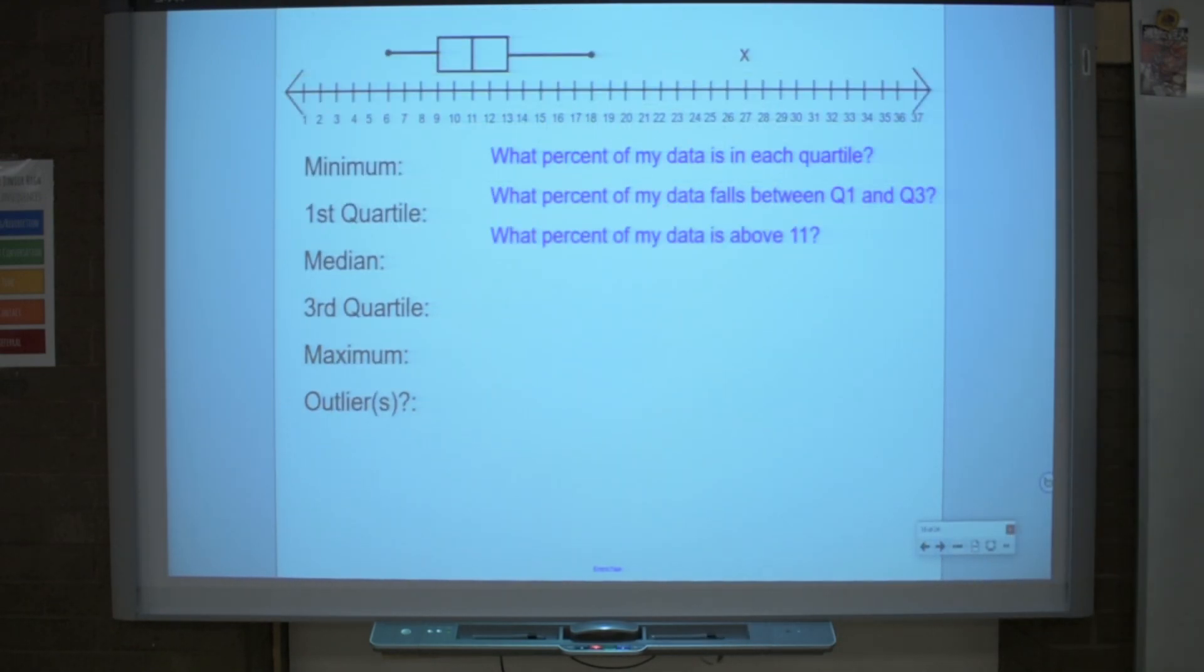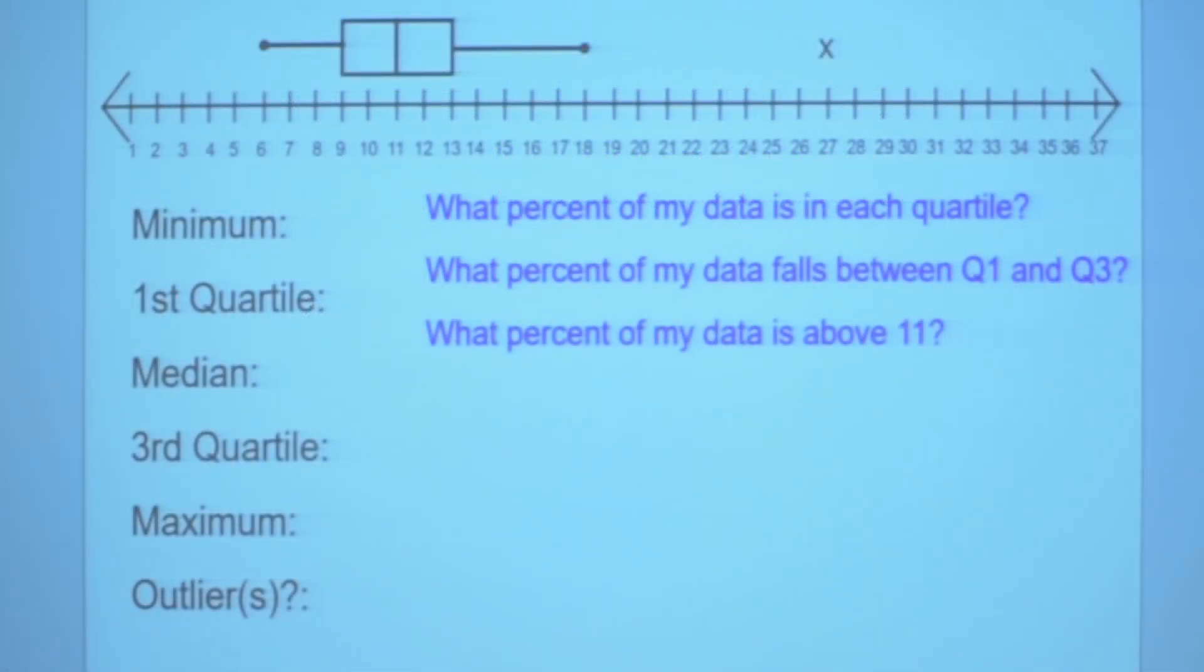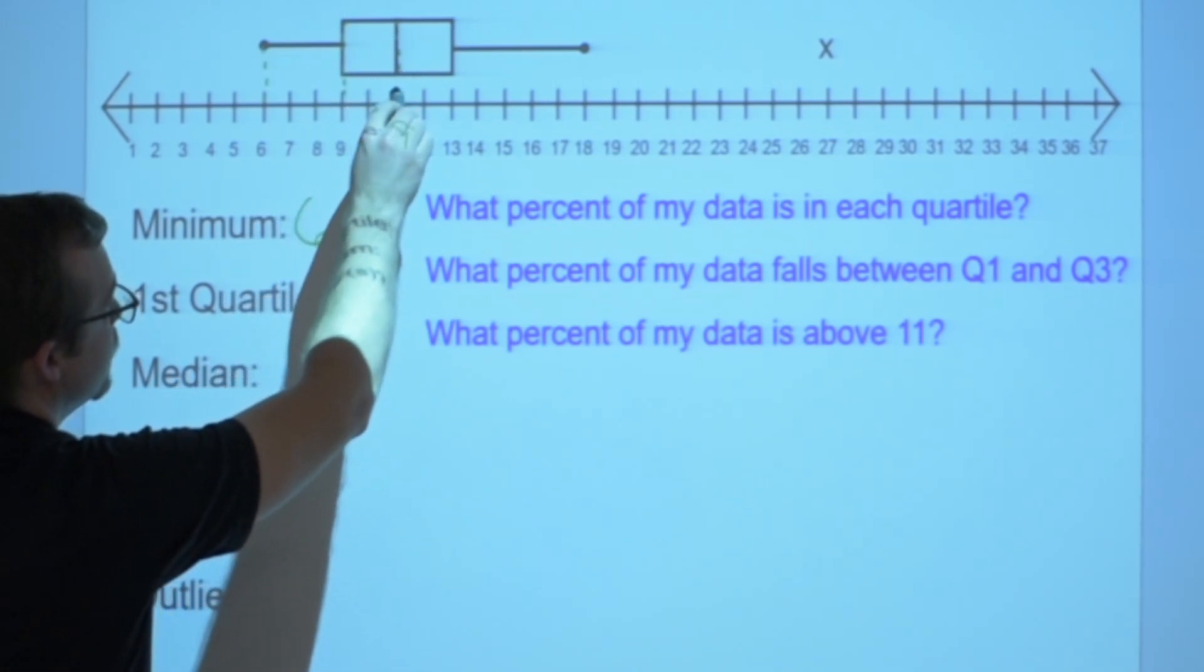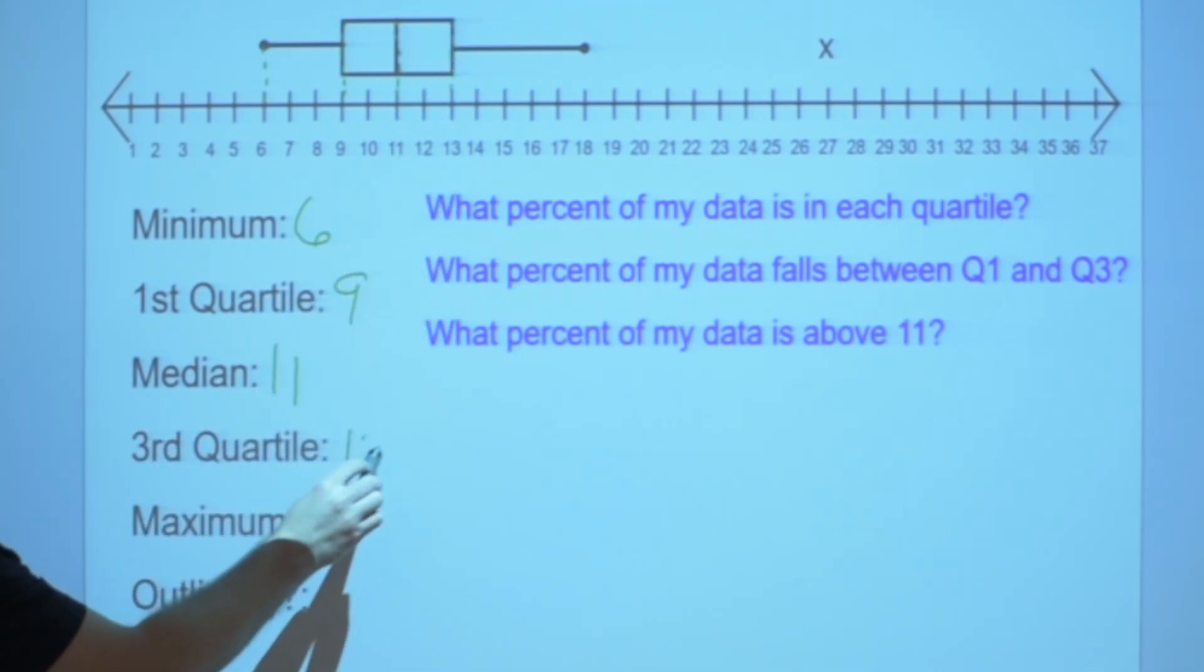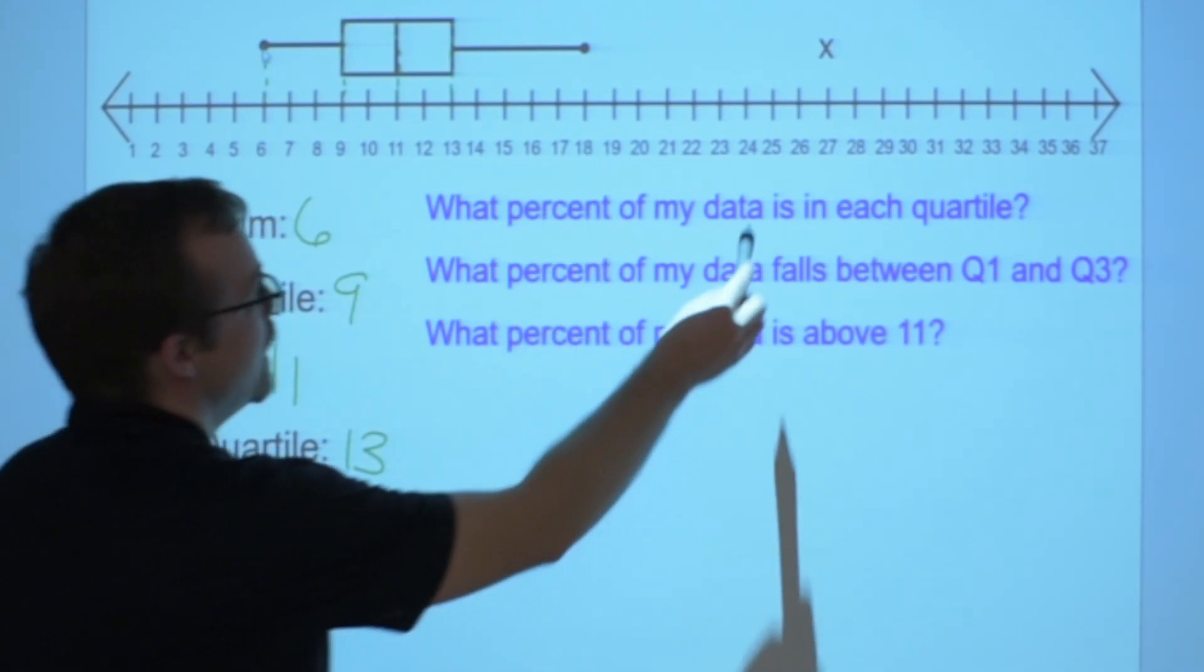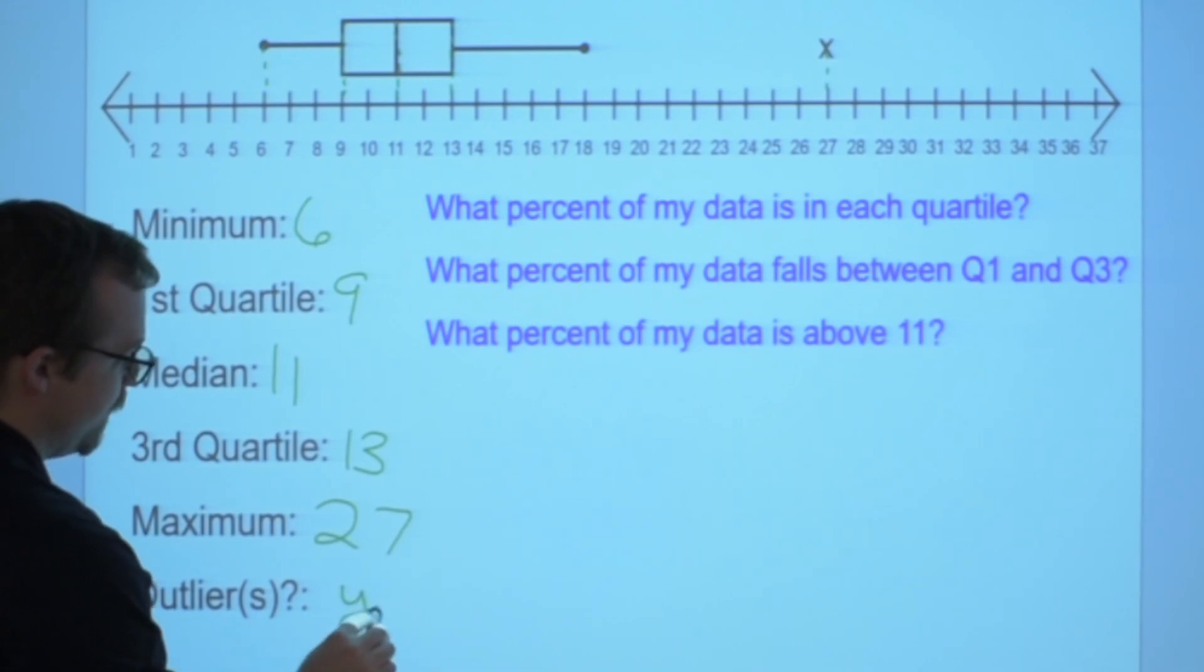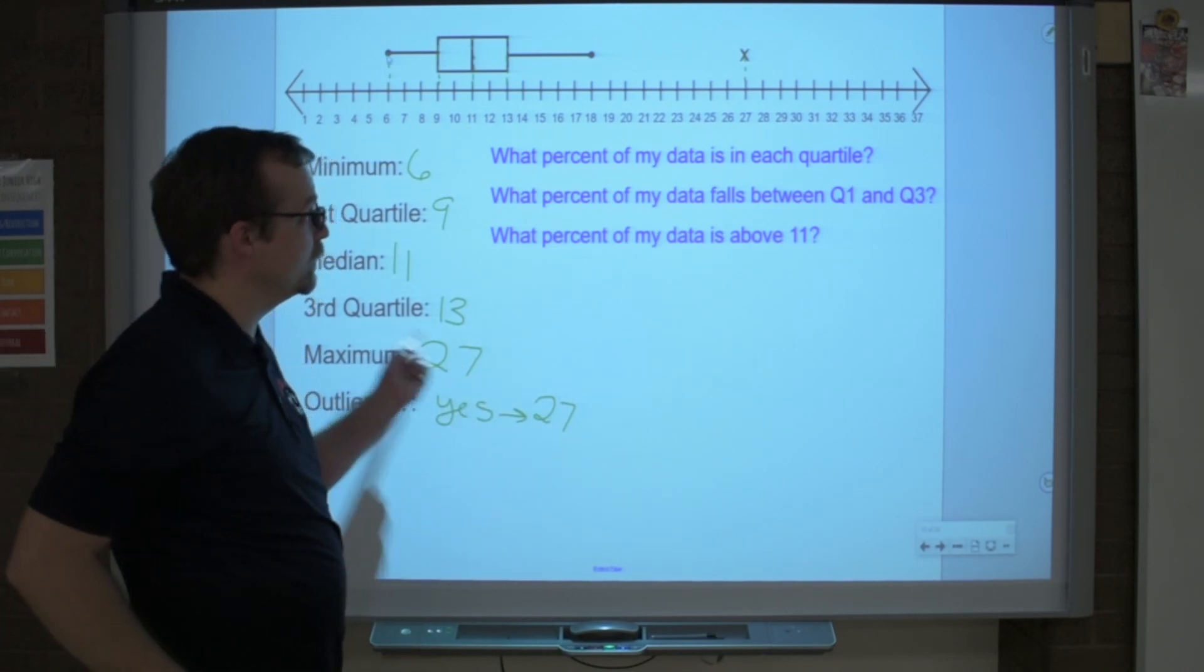Boom shakalaka. Maybe you should pause the video and try this one on your own first. Let's find the minimum. Minimum is right here. It looks like it's at 6. Our first quartile is where the box starts. That's at 9. The median, in the middle of that box right there, 11. The third quartile is the end of the box, 13. The maximum is not 18. The maximum is this guy way out here, 27. Just because it's an outlier does not mean it's not the maximum. It is an outlier. So, yes, we do have one, and that is at 27. The maximum can still be the outlier. Don't forget that.